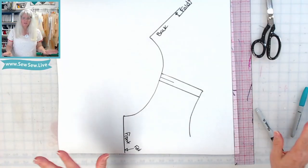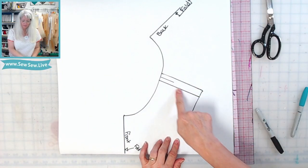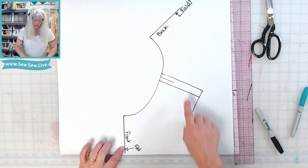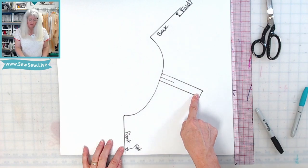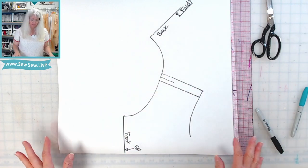Alright, so I have my pattern pieces overlapped at the shoulder seam here. So this is the center front and this is the center back, and then I've overlapped them at the seam line and I've drawn it onto a piece of paper.